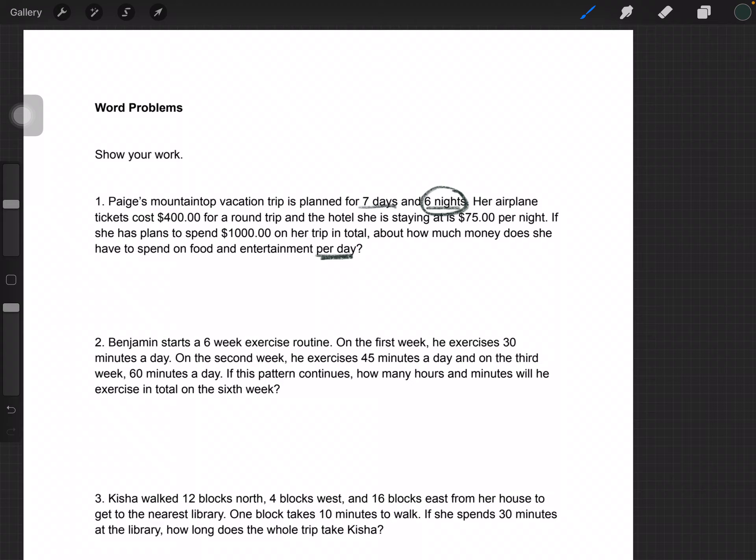She's already spending $75 per night and $400 for the plane tickets. So 75 times 6 nights equals $450. $450 plus $400 that she's already paying for the flight is $850. She has $1,000 in total minus $850, which gives her $150 for food and entertainment total. That has to be divided by 7 because she's there for 7 days, which would give us around $21.44 per day.